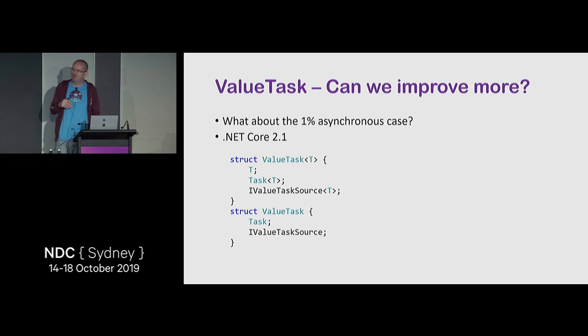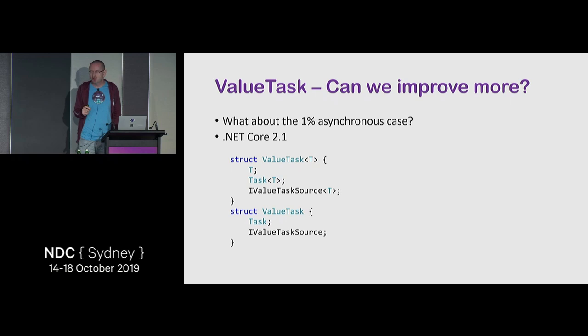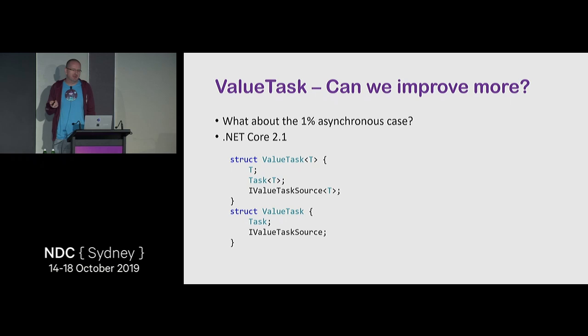That's exactly why you don't want regular people to use IValueTaskSource — you have to be very cautious, know how you're calling it, manage lifetimes, and not mess up. It's almost like C++ memory management. It's easy to get wrong, which is why we don't recommend it. But on the hot paths inside BCL it's used heavily, and maybe five to ten high-performance libraries in the world use it where the value justifies the complexity.